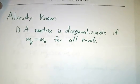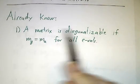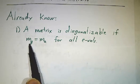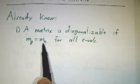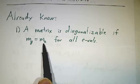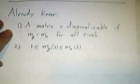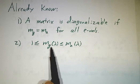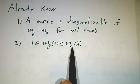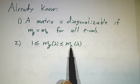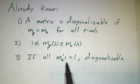Let's recap what we already know. We already know that a matrix is diagonalizable if the geometric multiplicity equals the algebraic multiplicity for every single eigenvalue. We also know that the geometric multiplicity is trapped somewhere between one and the algebraic multiplicity. So if all the algebraic multiplicities are one, all the geometric multiplicities are one and it's diagonalizable.